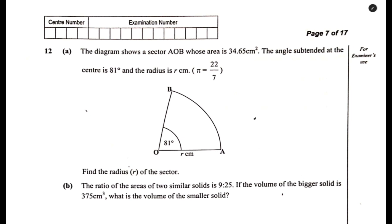This is question 12. The diagram shows a sector AOB whose area is equal to 34.65 centimeters squared. The angle subtended at the center is 81 degrees and the radius is R centimeters. Take pi to be 22 over 7. The question is: find the radius R of the sector.